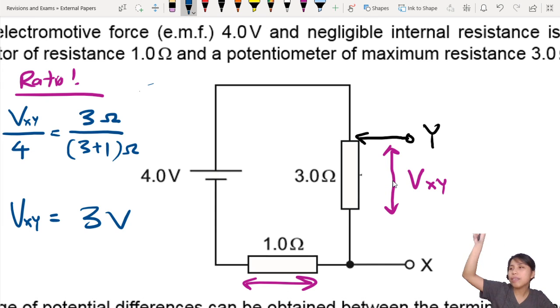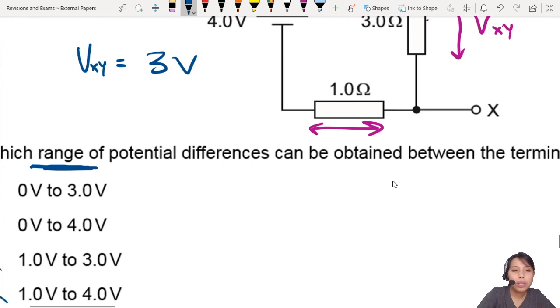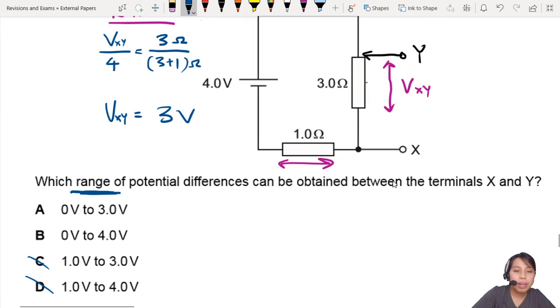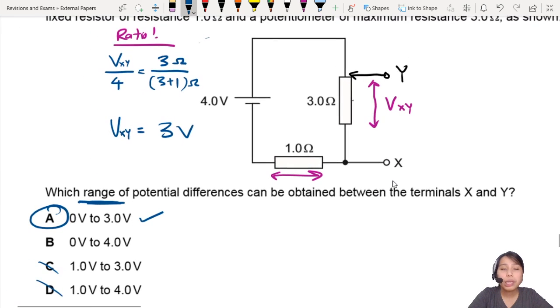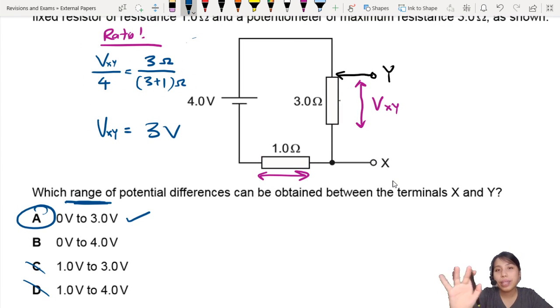So just remember, you are moving the slider up and down. And that's how you can check what you want. So 3 volts will be the maximum here. So this will be the only possible correct answer, 3 volts. Think of potential dividers and ratios the next time we see something like this. And that's all for this question. I will see you in the next one.